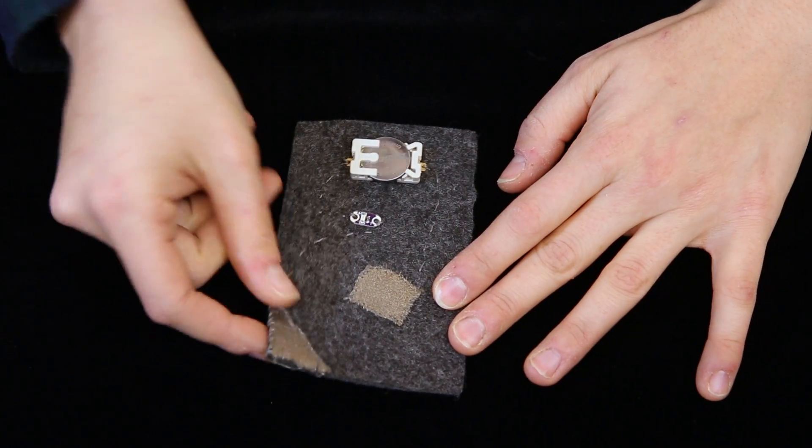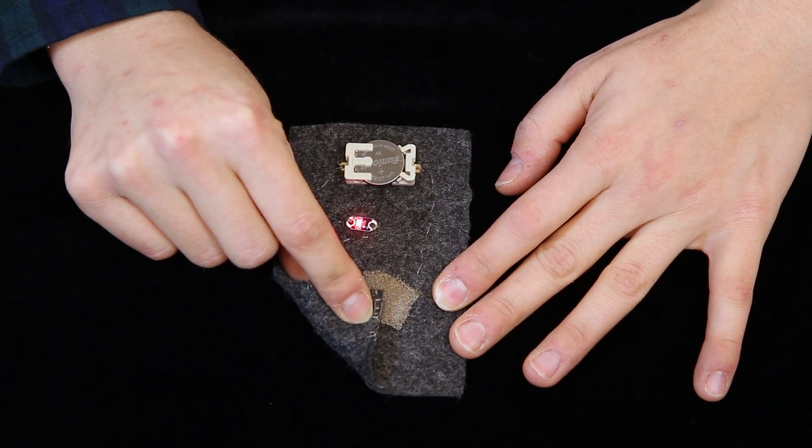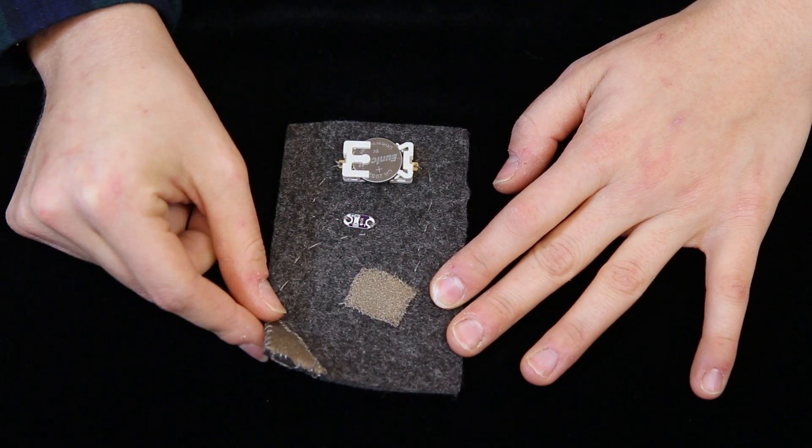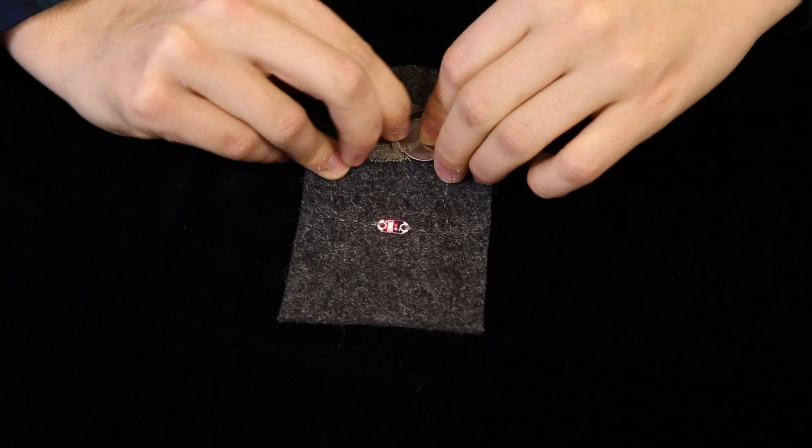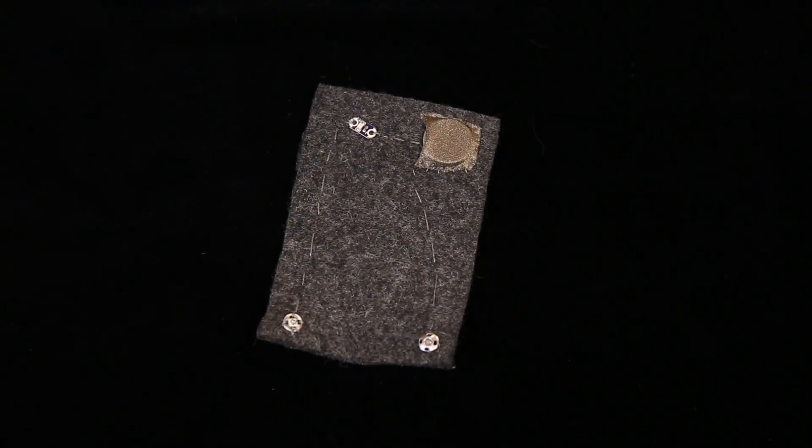Today we are going to build three simple electronic components using only soft materials: a momentary push button, a coin cell battery holder, and an on and off switch.